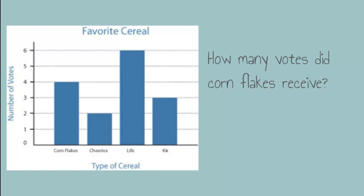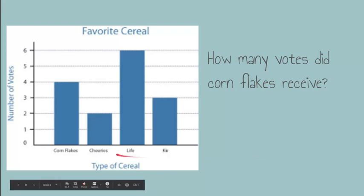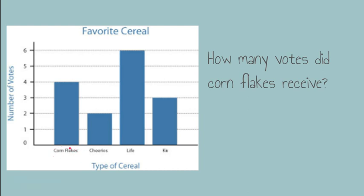How many votes did Cornflakes receive? If we look at Cornflakes, I'll find where it says Cornflakes and look up to the top of the bar, then follow the top of that bar over to where it says 'number of votes,' and I can see that's four. So how many votes did Cornflakes receive? They received four.